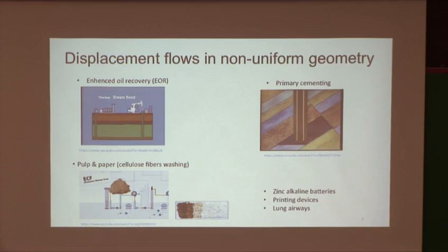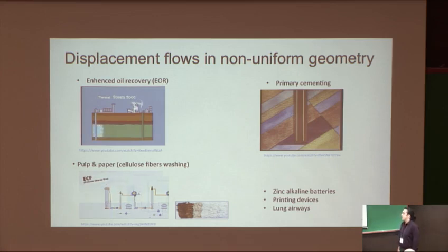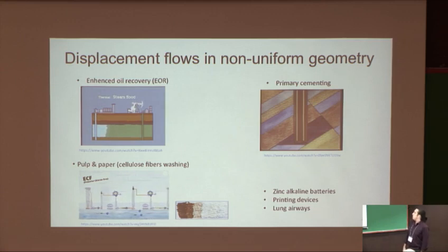So displacement in non-uniform geometries occur everywhere and non-Newtonian features are also prevalent. For example, in enhanced oil recovery you have many examples of displacement of non-Newtonian fluids in non-uniform geometry in pulp and paper applications, and you can have it in primary cementing, which is our favorite.